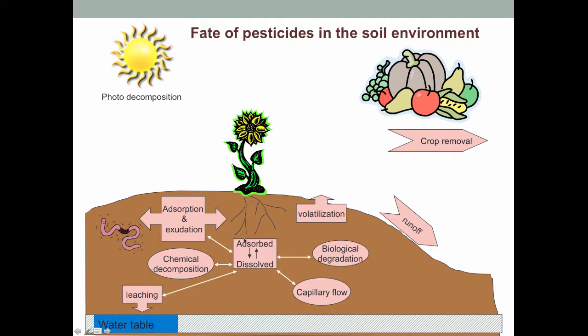Once pesticides are in the soil, they can either be adsorbed or dissolved. If they enter the water, they can be picked up by a plant or leach through the water down to the water table. Alternatively, they can be picked up by invertebrates, decompose due to chemical or biological processes, or in some cases be volatilized directly out of the soil into the air. Beyond that, sometimes they leave the site directly attached to soil — either stuck onto produce or as runoff during a rain event.